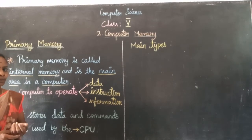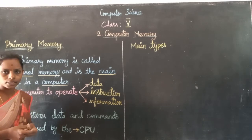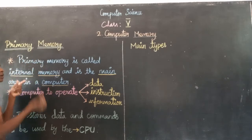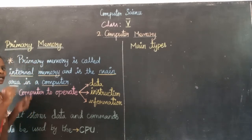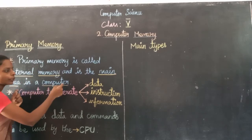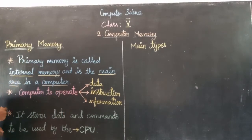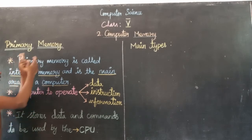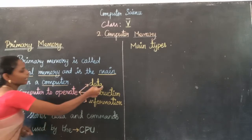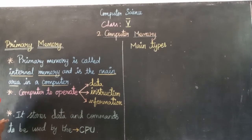Storage capacity of a computer — you can store data in the memory. Primary memory means internal memory of the system. Data, instructions, and information are stored in primary memory.